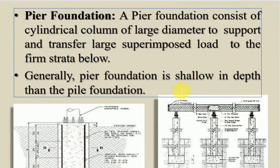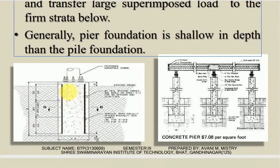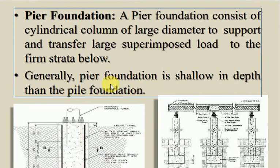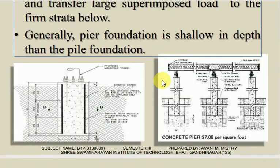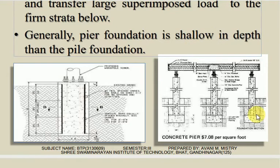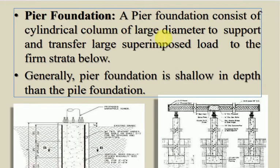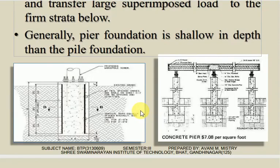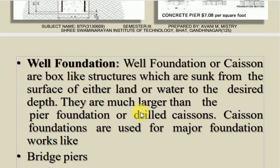Pier foundation consists of a cylindrical column of large diameter to support and transfer the large superimposed load to the firm strata below. Pier foundation is shallower in depth than pile foundation.